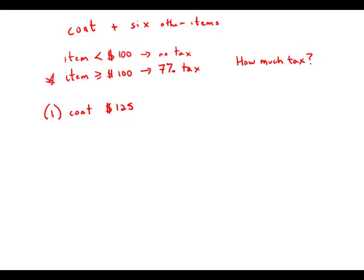Given statement number one, we have no idea what the other items are. It could be a few items over $100 and then a few items that cost just $1 or $2, or it could be all items under $100. So because we have no idea of those other items, this statement is insufficient.